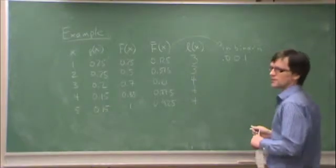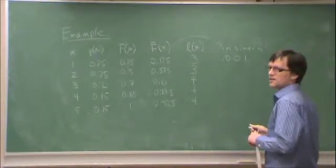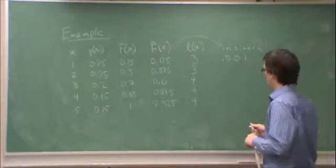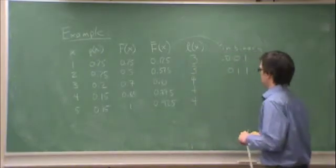How about 0.375? That's 3 eighths. If it's 3 eighths, then it's 0.011. We need 3 bits of that, so that's good.